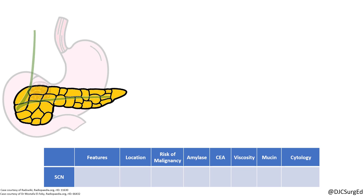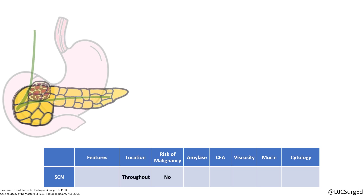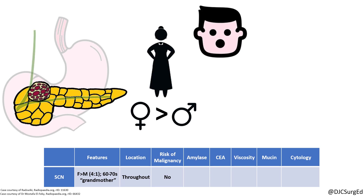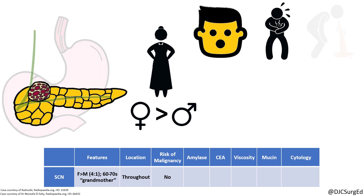Serous cystic neoplasms are generally benign, located throughout the pancreas, and more commonly found in older patients with a female predominance. Most are asymptomatic, but large lesions can cause obstruction of the bile duct and jaundice, obstruction of the pancreatic duct and pancreatitis, or obstruction of the stomach and gastric outlet obstruction.